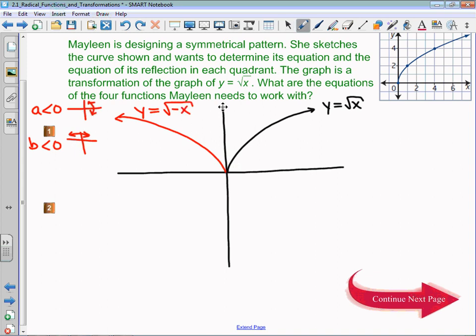To get that quadrant 4, I'm going to reflect it across the x-axis, which means this blue shape is when the a value is negative 1, so that's y equals negative times the square root of x.